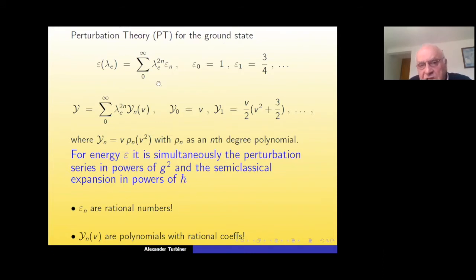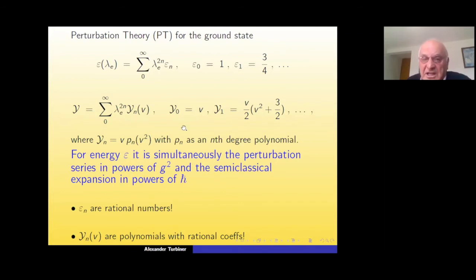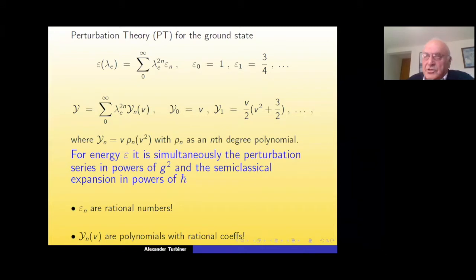The important conclusion is that the expansion of energy in powers of the effective coupling constant is simultaneously a perturbation series in powers of G squared and a semi-classical expansion in powers of ħ. Because of the effective coupling constant, the problem is not two-parametric but one-parametric — it depends on the combination of ħ and G. All corrections ε_n are just numbers, independent of ħ.